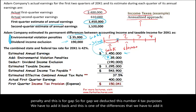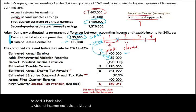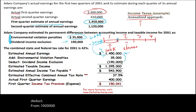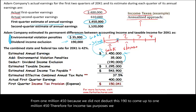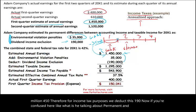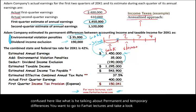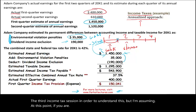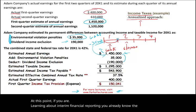Also, the dividend income exclusion is effectively a phantom deduction — it's a deduction for tax purposes but not for GAAP. Therefore we deduct one hundred and ninety thousand, because we did not deduct this amount to arrive at one million four hundred and fifty thousand. For income tax purposes we deduct the one hundred and ninety. If you're confused about permanent and temporary differences, go to Farhat Lectures and review the deferred income tax session — but at this point I'm assuming you already know the differences.